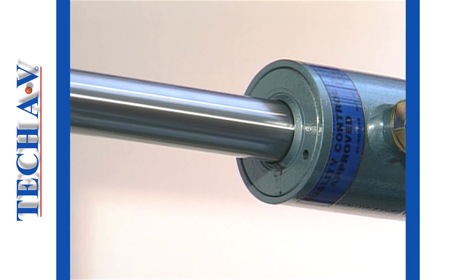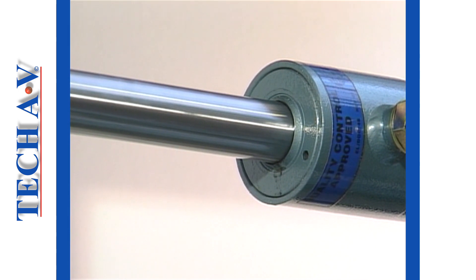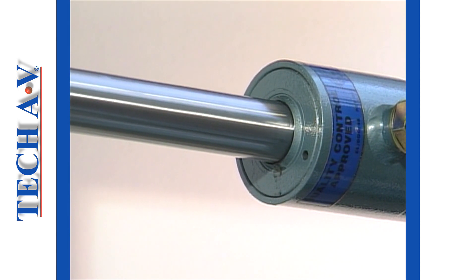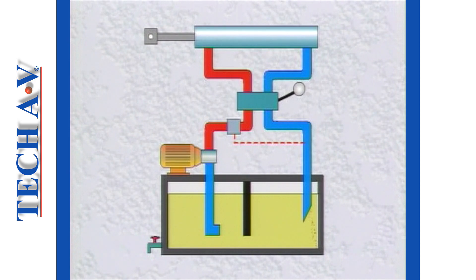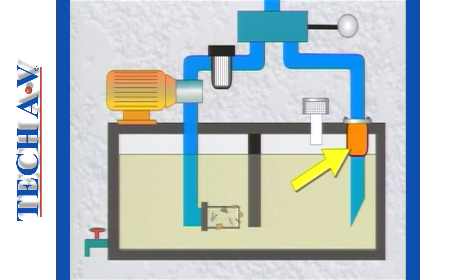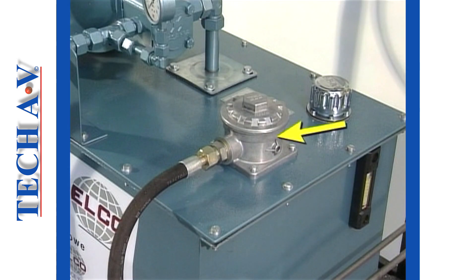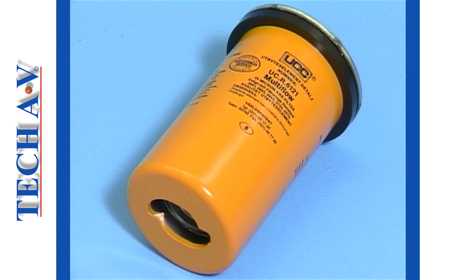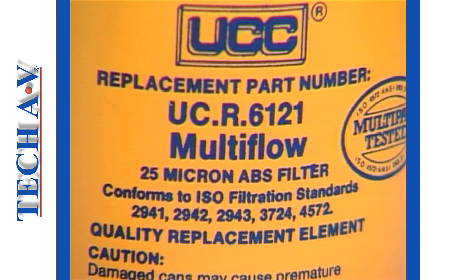Dirt will often enter a system from the outside, through, for example, worn cylinder seals. If unchecked, this dirt will find its way into the return line and, as previously mentioned, result in a build-up of sludge at the bottom of the tank. A well-designed system will include a return-line filter, usually mounted directly into the tank, as seen here. The common rating for return-line filters is 25 to 30 microns.